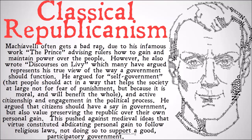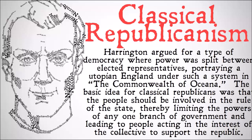Machiavelli also argued for active citizenship and engagement in the political process. He argued that citizens should have a say in government, but also value preserving the republic over their own personal gain. This pushed against medieval ideas that virtue constituted abdicating personal gain to follow religious laws, rather than supporting a good participatory government. Harrington argued for a type of democracy where power was split between elected representatives, portraying a utopian England under such a system in the Commonwealth of Oceana. The basic idea for classical republicans was that the people should be involved in the rule of the state, thereby limiting the powers of any one branch of government, and leading to people acting in the interest of the collective to support the republic.